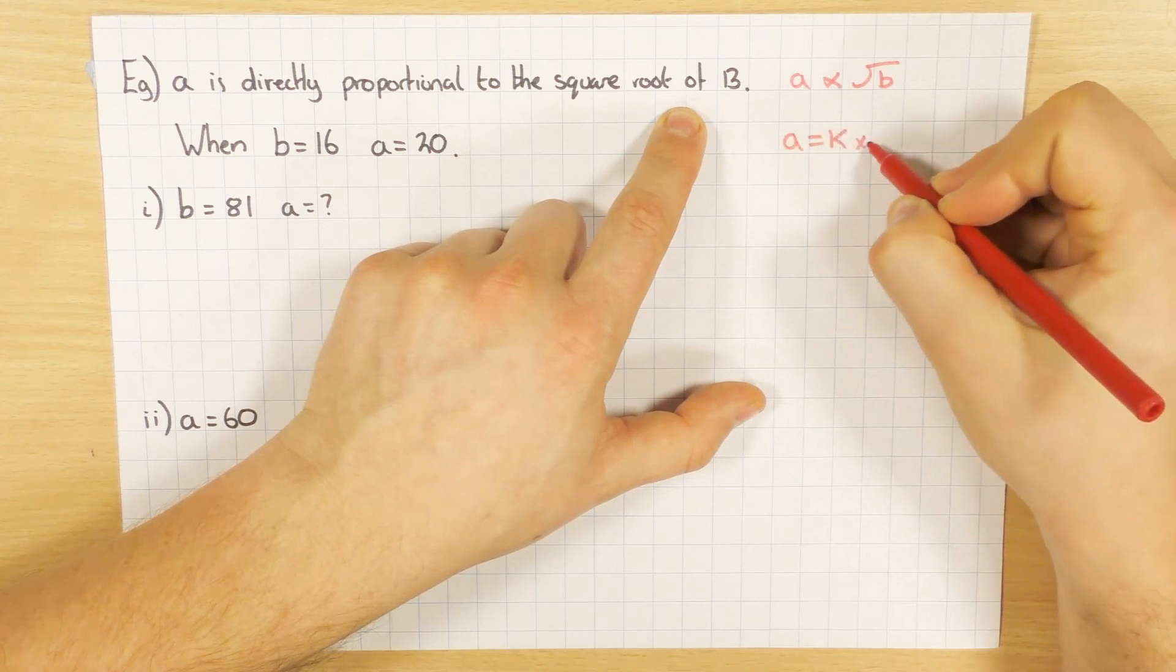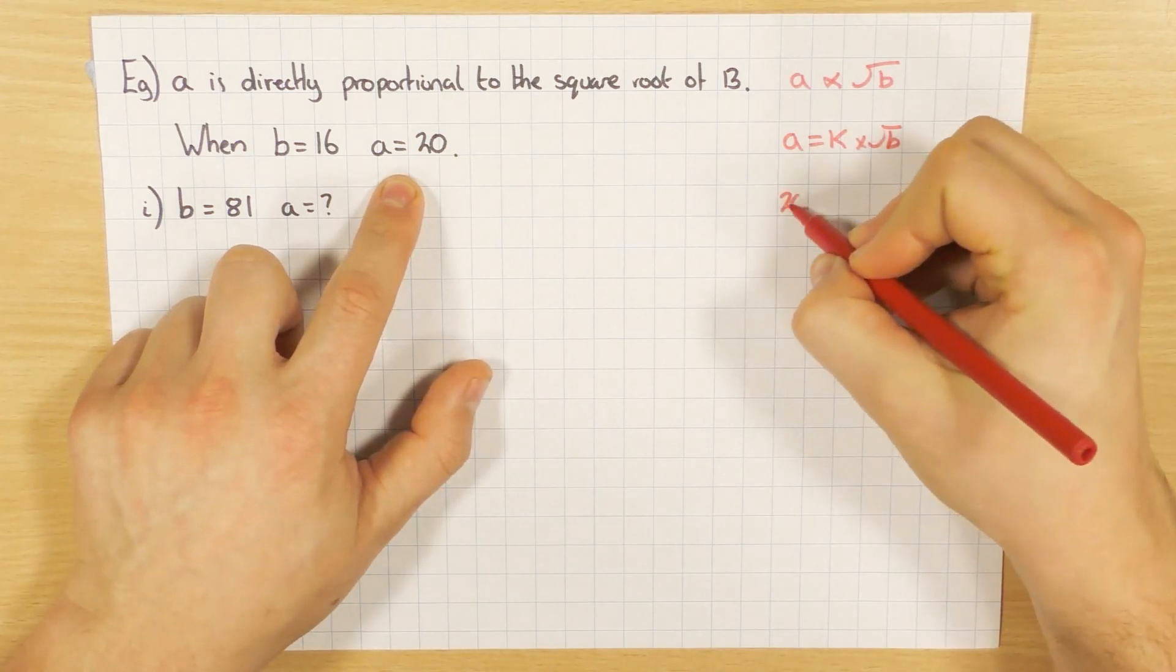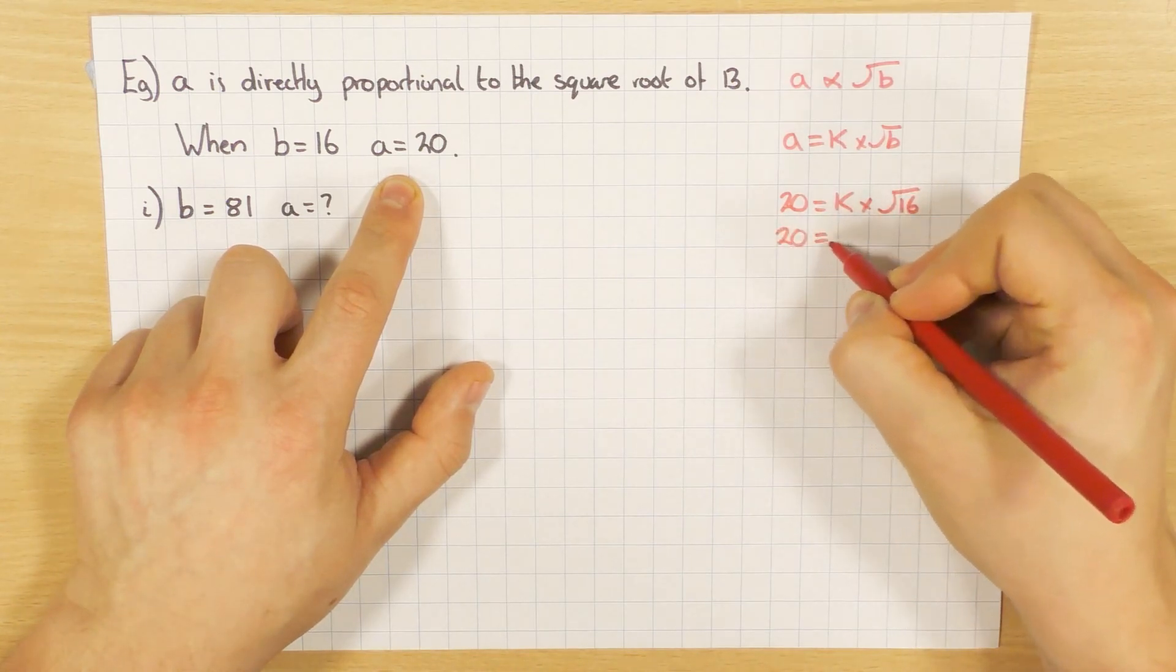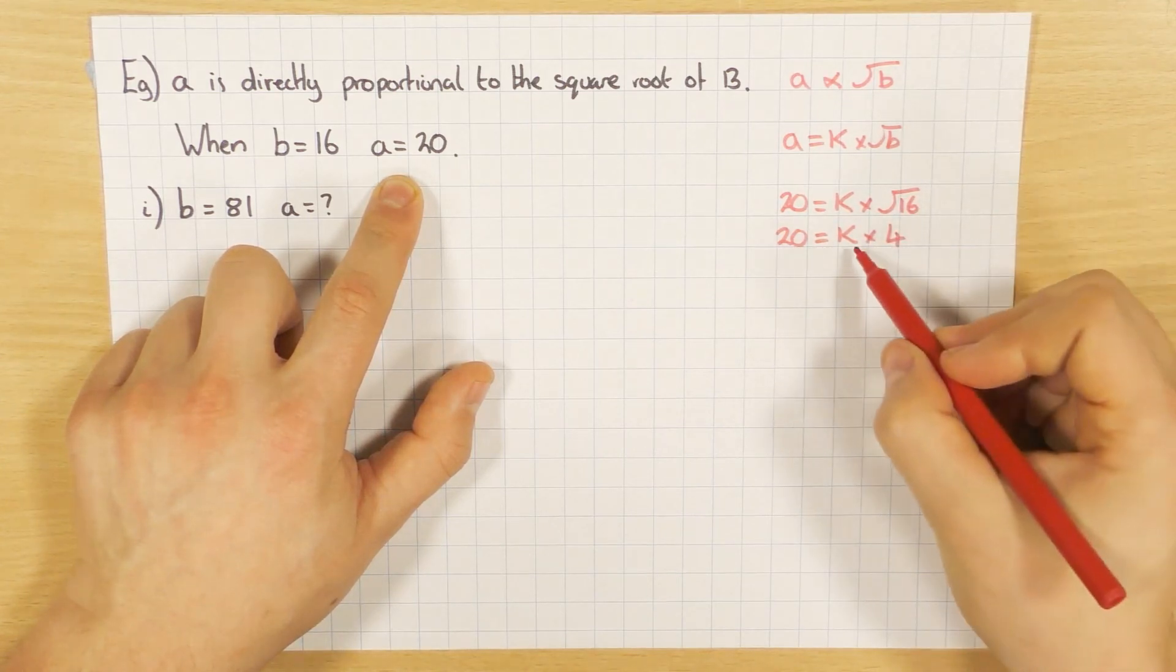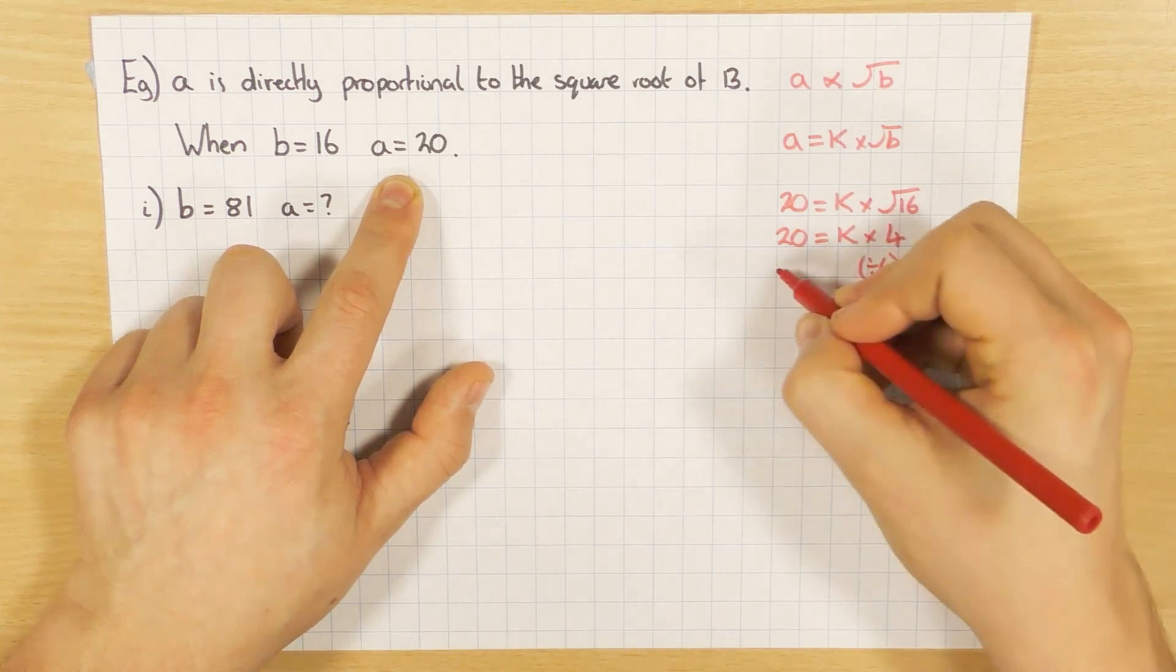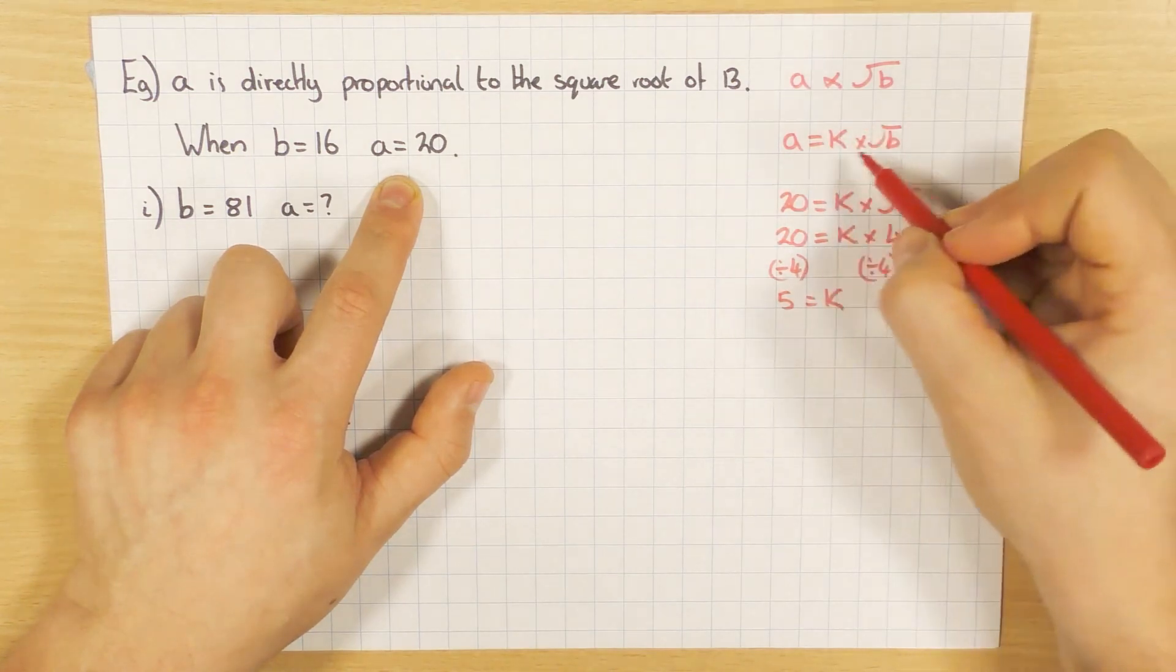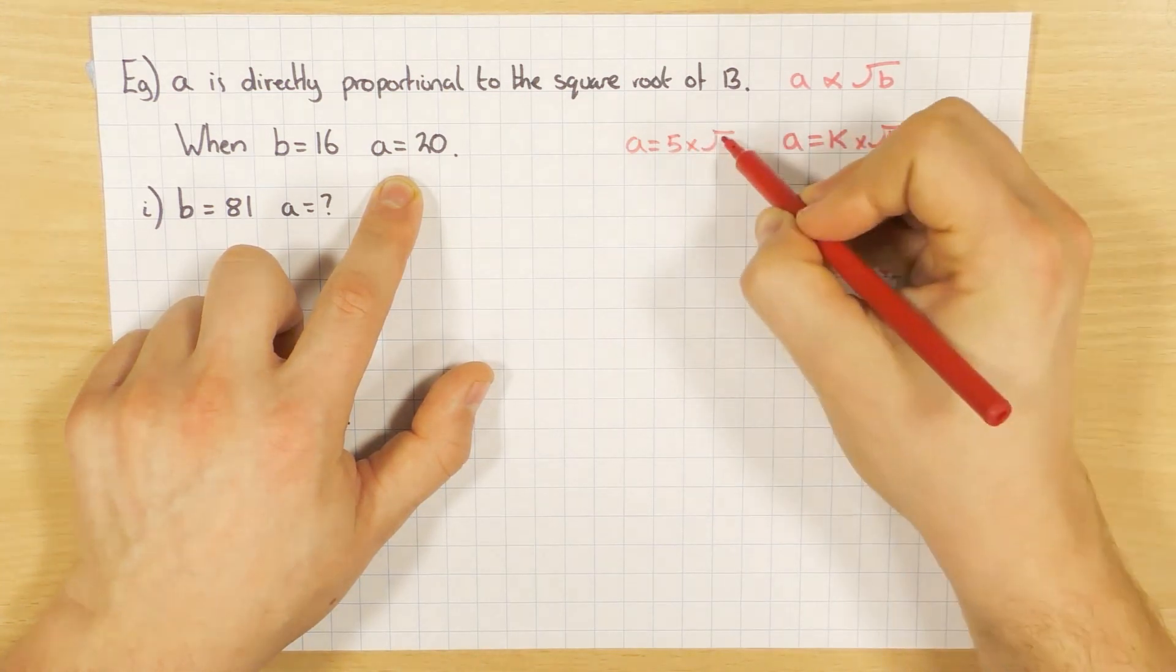So a equals the constant times the square root of b. We've got being given two values here. So a is 20. And that equals k times the square root of 16. So I don't need to calculate for this one, I don't think. So k times the square root of 16. The square root of 16 is 4. So k times 4. I'm timesing by 4. I'm going to divide both sides by 4 by solving the equation. So 5 equals k. Put it back into the formula up here. a equals 5 times the square root of b.